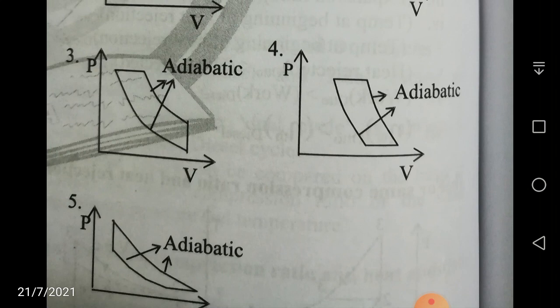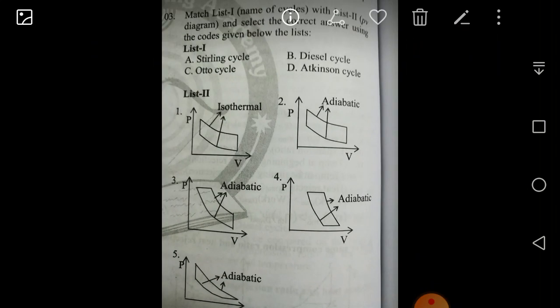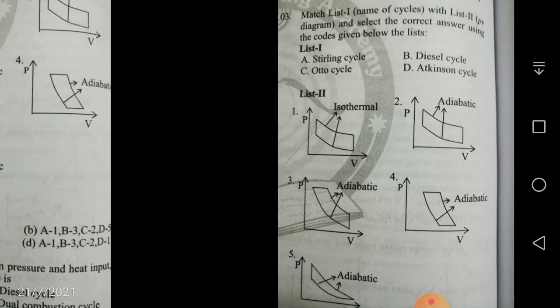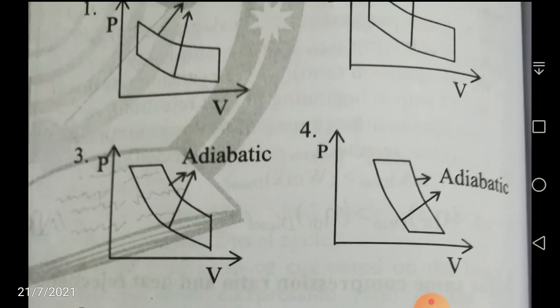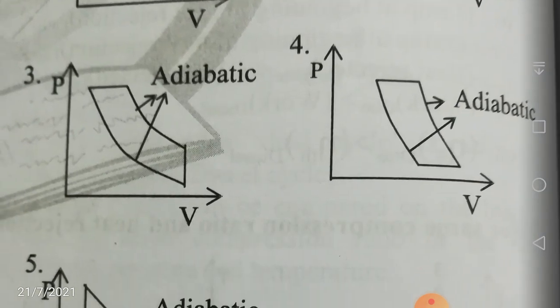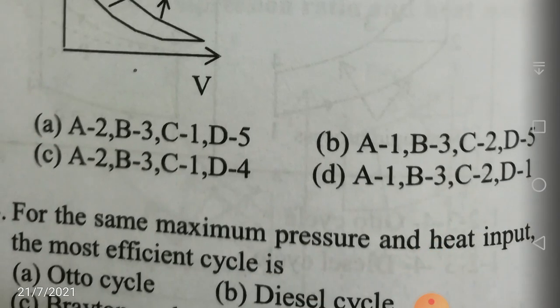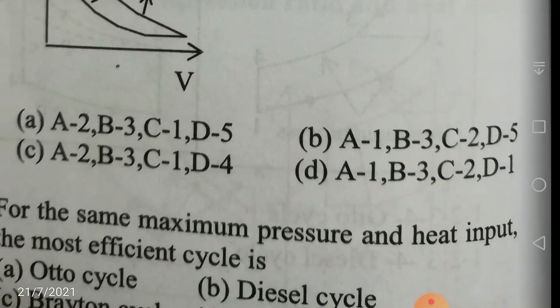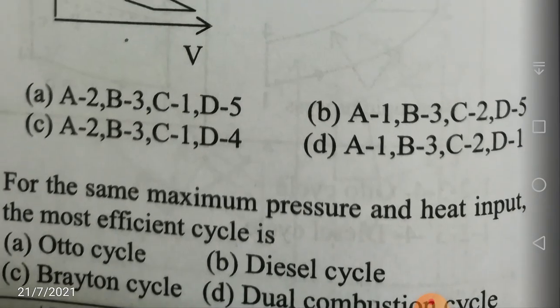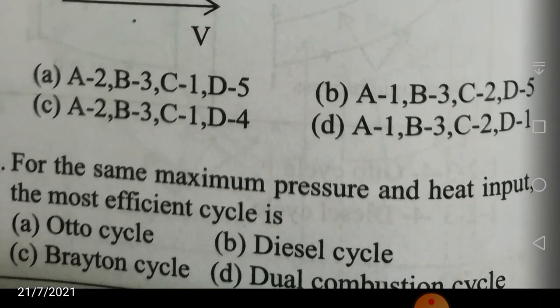Even if you know four out of five answers in a matching question, you can easily identify the correct choice. Even if you don't know one answer among the four or five, knowing the other three or four answers allows you to select the correct option — that is the advantage of multiple choice questions. The answer options are: A2, B3, C1, D5; or A1, B3, C2, D5; or A2, B3, C1, D4; or A1, B3, C2, D1.